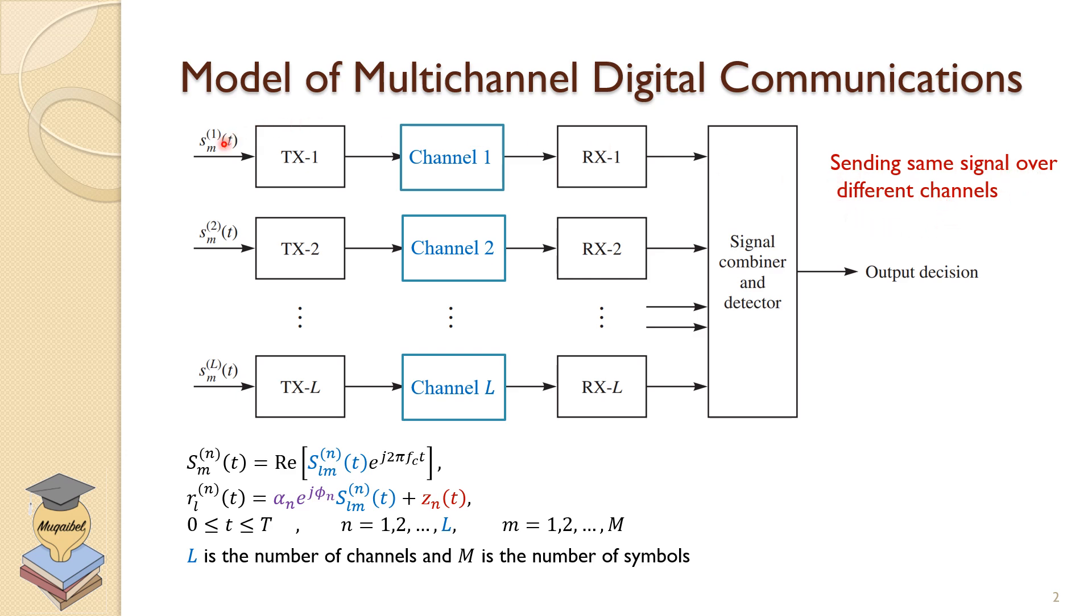So the information goes through TX1, the first transmitter, goes to channel 1, and then received by RX1, TX2 received by RX2, and so on. So instead of having one branch, like in the usual case, we have multiple channels.